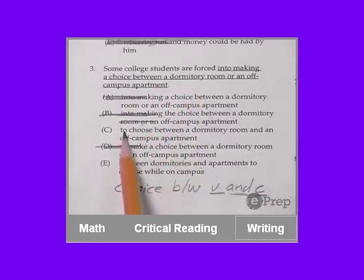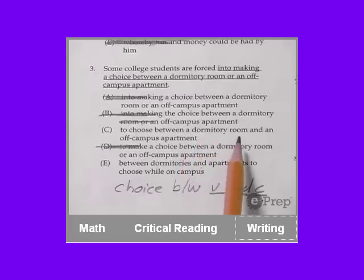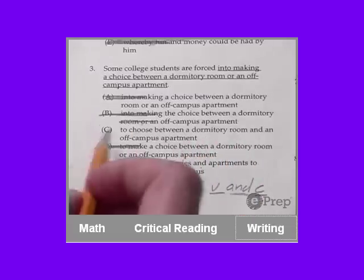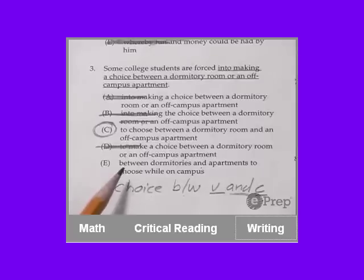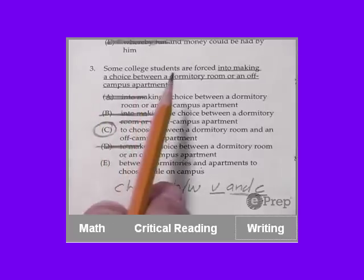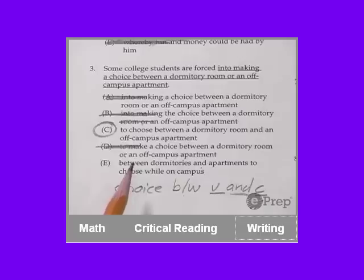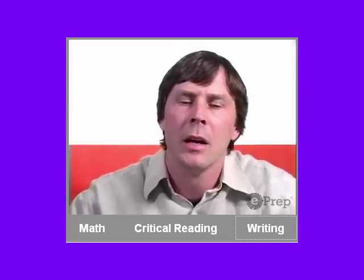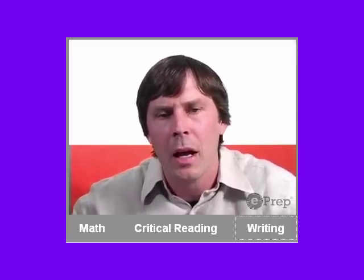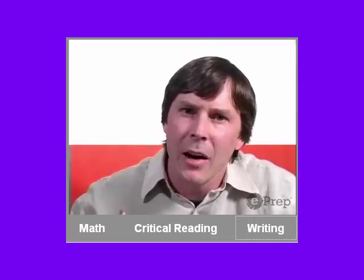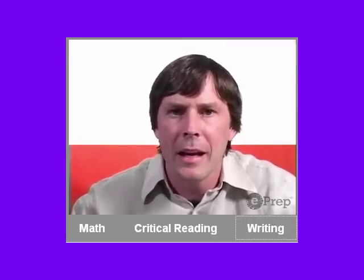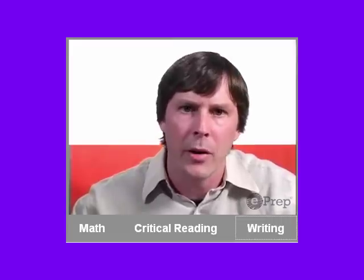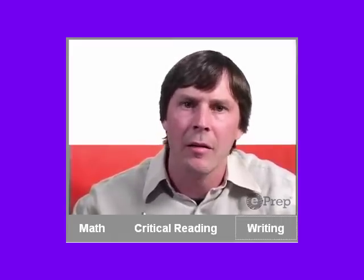Some college students are forced to choose between a dormitory room and an off-campus apartment. I like C a lot. I'd be inclined to pick this one and move on. But let's quickly take a look at E. Some college students are forced between dormitories and apartments to choose while on campus. Unbelievably awkward. Certainly not better than C. Cross it out. Pick C with confidence and move on. If you didn't know that construction, don't worry about it. We want to keep teaching you these things. Because I think not only will they help you increase your SAT score, in the long run they will make you a better writer. So keep it up. Keep practicing. Eventually you'll get there.